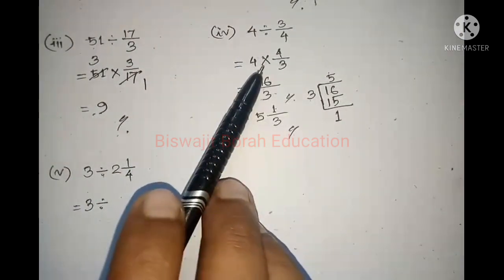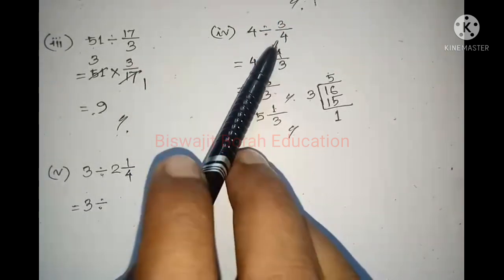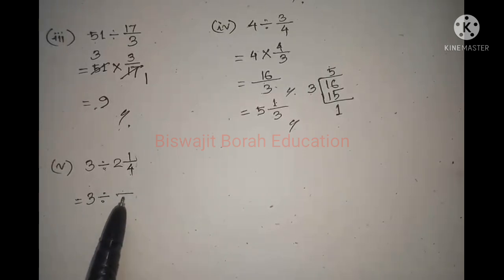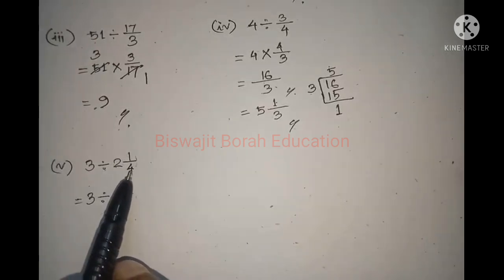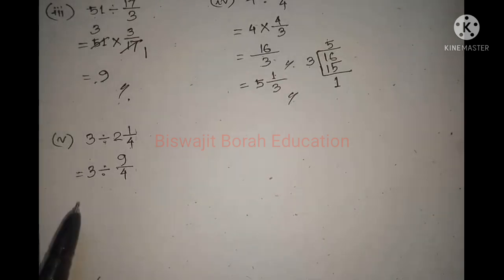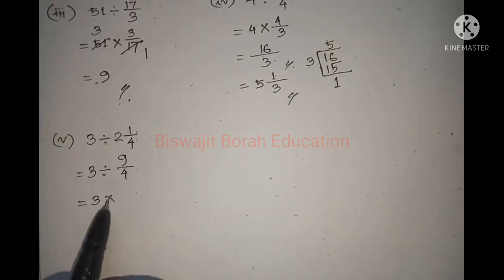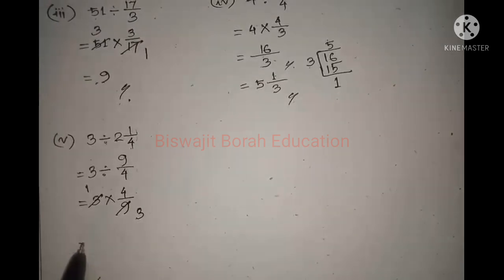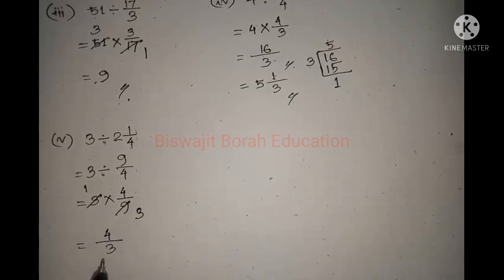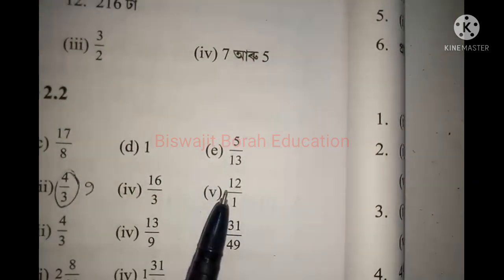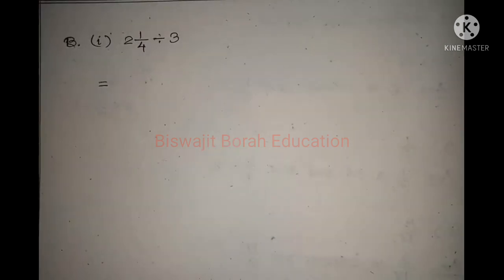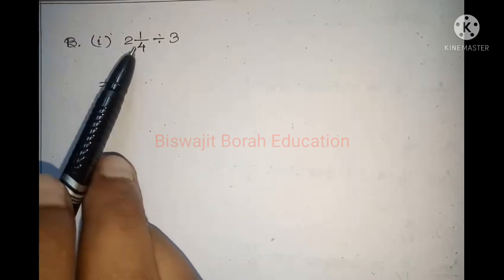The other fraction is equal to 12 by 1. Either 1 or 4 by 3. In this case, b number is equal to 2, and 1 by 4 divided by 3.